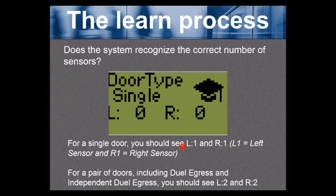L1 equals the left sensor, R1 equals the right sensor. For a pair of doors, including dual egress and independent dual egress, you should see L2 and R2. So left sensor, right sensor.